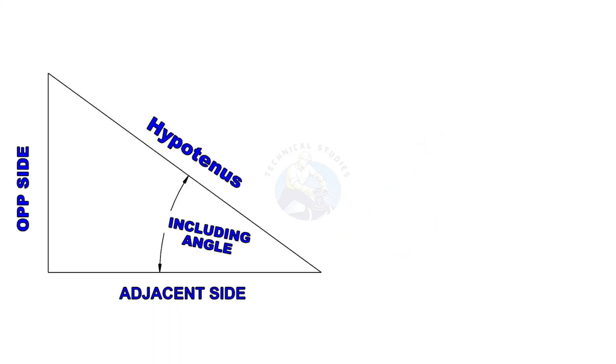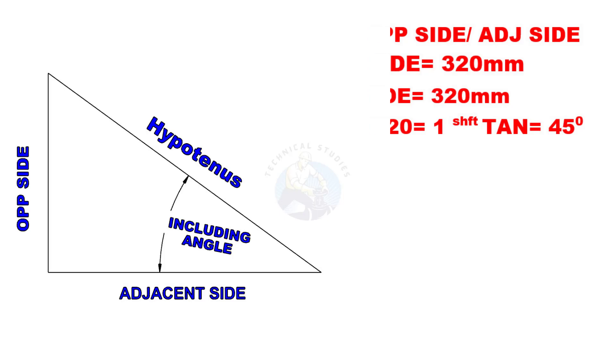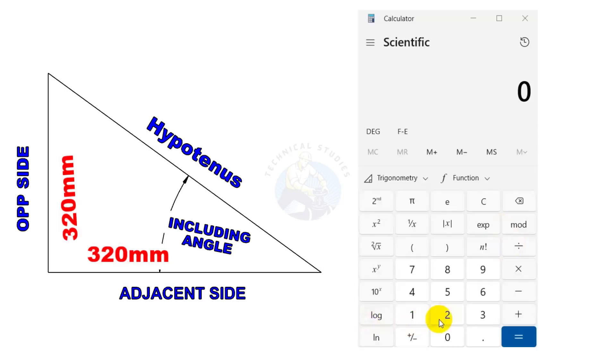The tan rule tells the included angle of a right angular triangle is opposite side divided by adjacent side. Here, the opposite side and the adjacent side are 320 each. Let us calculate. 320 divided by 320 is equal to 1.